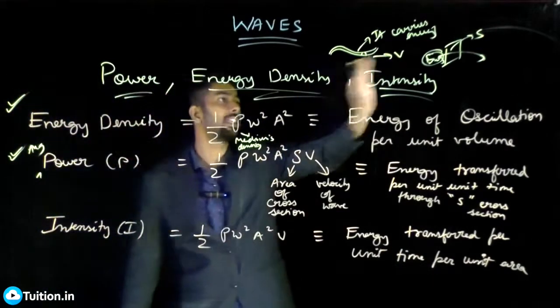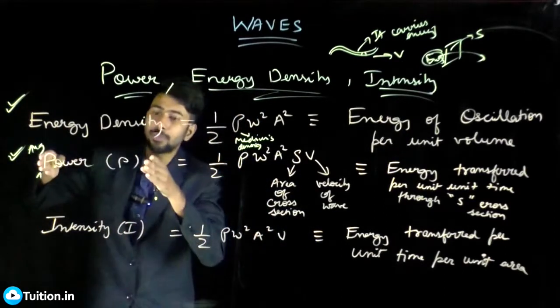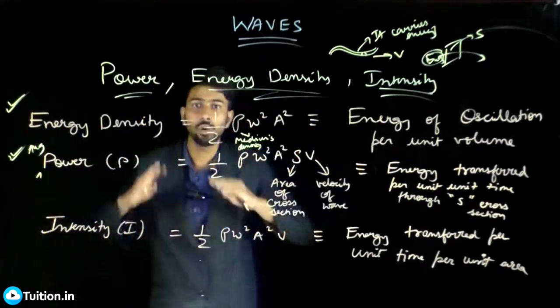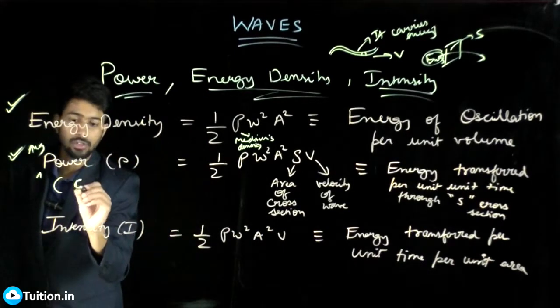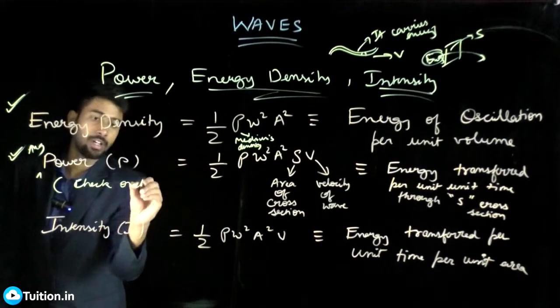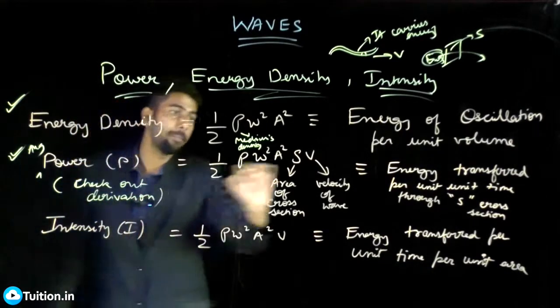You could say average power that is getting transferred. Instantaneous power is a different thing. In fact, this average power has come from that instantaneous power. I would actually recommend you to check out its derivation. Check out derivation yourself. It will help you understand how it has come better.